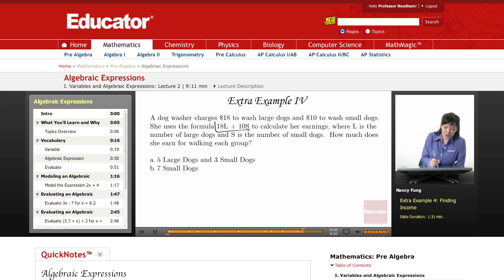So they've given us the algebraic expression here, 18L plus 10S, $18 for every large dog and $10 for every small dog. And now they're giving us scenarios, values to plug into this algebraic expression.